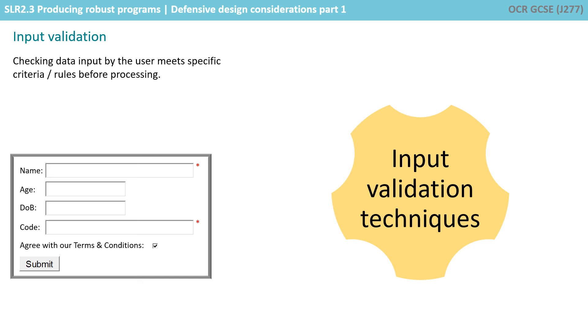Validation is checking data inputted by the user meets specific requirements or rules before processing. There are five validation checks which you need to be aware of for GCSE.